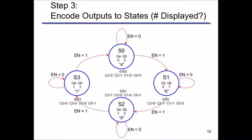The combinational logic outputs correspond to what I want to display. A four in binary is 0100, so the outputs are 0100. If I want to output a six, in binary that's 0110. A nine is 1001, and a one is 0001. These are the encoded outputs for each state.